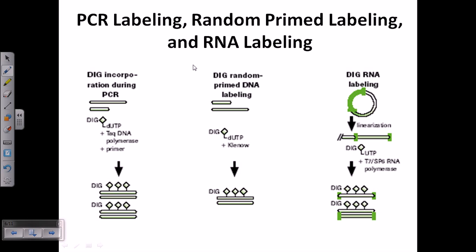The second technique used to produce a double-stranded DNA probe is random prime labeling. In random prime labeling, we utilize PCR. We design random primers against the DNA, add the primers, and also provide some modified dNTPs. In this case, the modified dNTP is dUTP that has been modified by attachment of a chemiluminescent molecule called digoxigenin, or DIG.